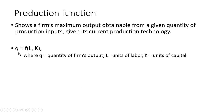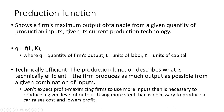In mathematical shorthand, a production function looks like this, where the quantity of output, Q, is a function of units of labor, L, and units of capital, K. We're going to assume that the production function describes what is technically efficient — that is, a firm produces as much output as possible from a given combination of inputs. We don't expect profit-maximizing firms to use more inputs than necessary to produce a given level of output. Using more steel than is necessary to produce a car raises cost and lowers profit — that would be inefficient. So a production function defines what is technically efficient.